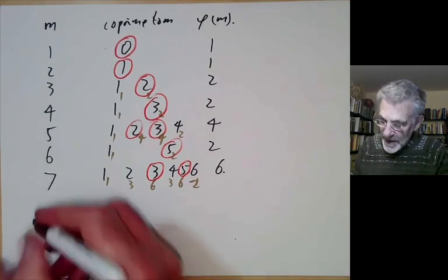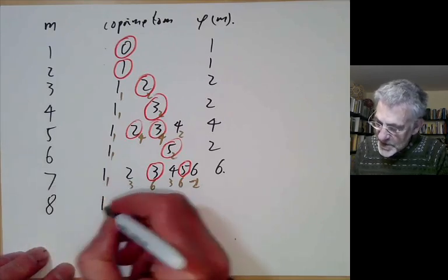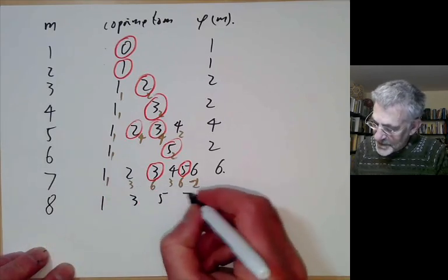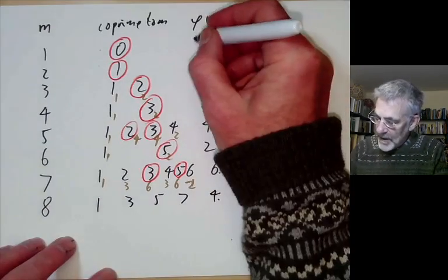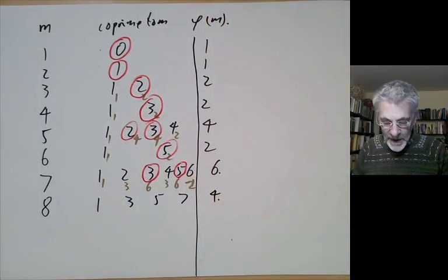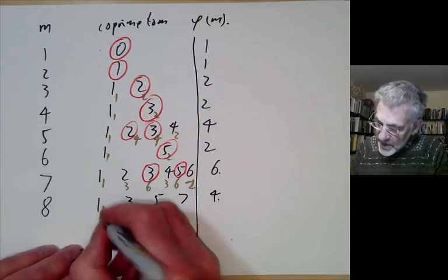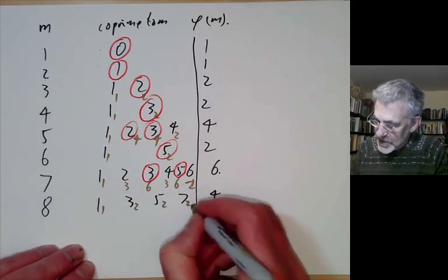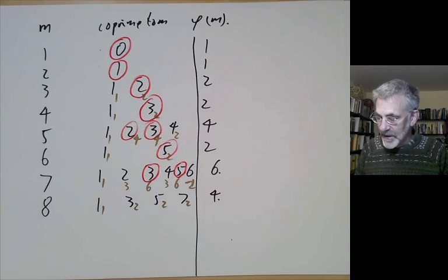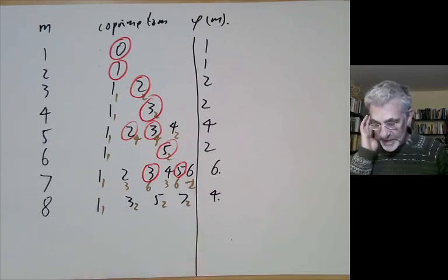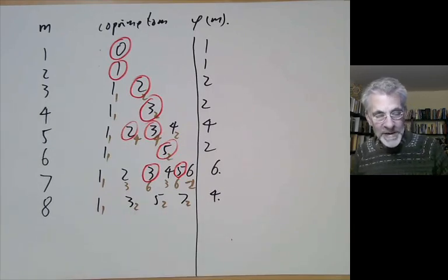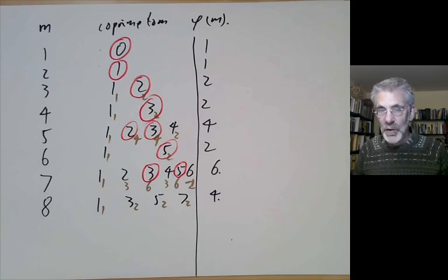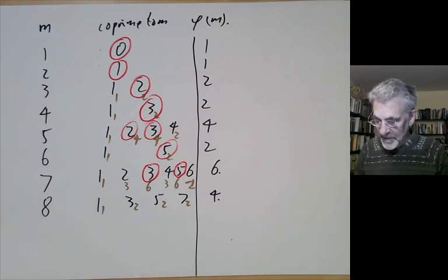For m equals 8, the residue classes are 1, 3, 5, and 7; phi of m is 4. All of these have their square equal to 1, so their orders are 1, 2, 2, and 2 respectively. There are no primitive roots mod 8. In fact, 8 is the first number that doesn't have a primitive root.